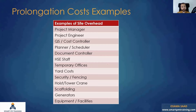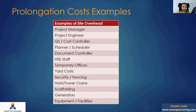This is a prolongation cost claim. If you have an extension of time for three months, for example, the contractor is actually working for three additional months on the project and has to pay salaries, indirect costs, and costs for assets such as staff, temporary offices, yard costs, hoist or crane, scaffolding, equipment, and facilities.